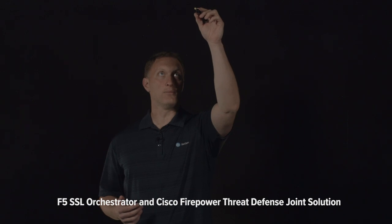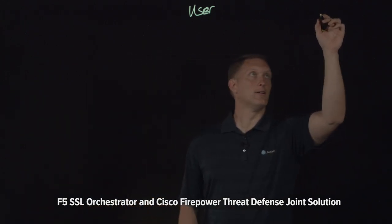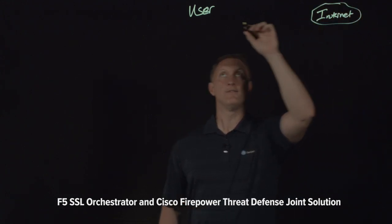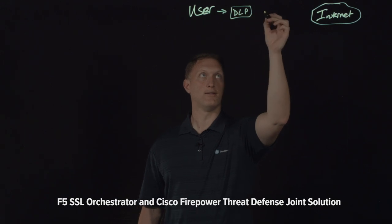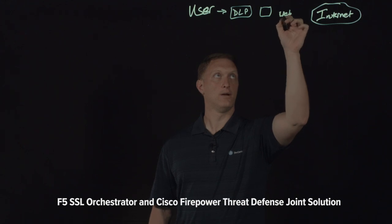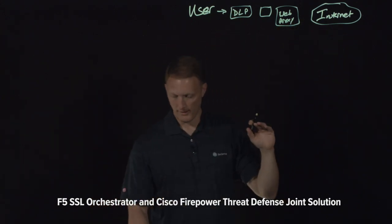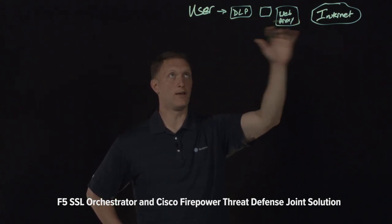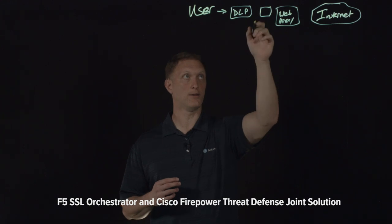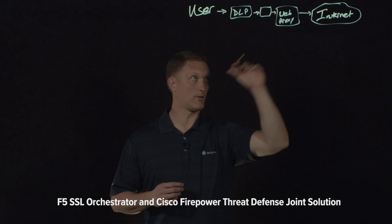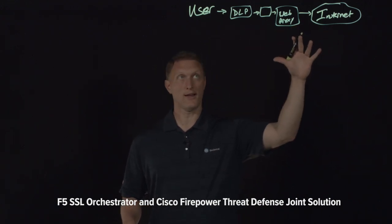Here's a common way people handle things today. You've got internal users accessing external resources on the internet, going through a series of security devices — like a data loss prevention device, a web proxy, and others. This is what we call a daisy chain setup. Each device has to decrypt the traffic, inspect it, re-encrypt it, and send it on. All of the traffic goes through every single one of these devices, even when it may not need to.